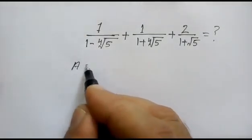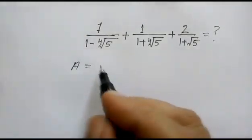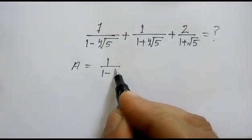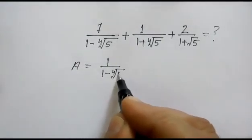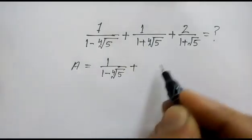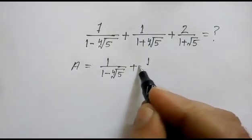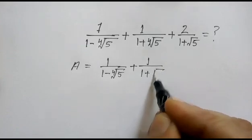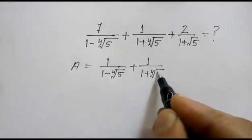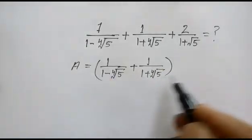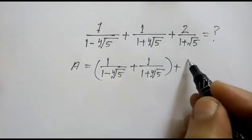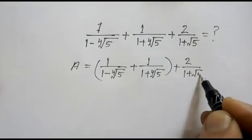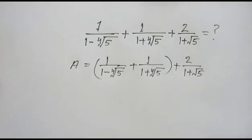Let A be equal to 1 over 1 minus 4th root of 5, plus 1 over 1 plus 4th root of 5, plus 2 over 1 plus square root of 5.